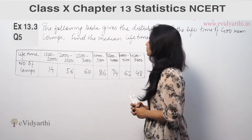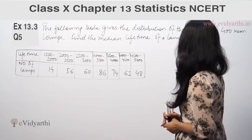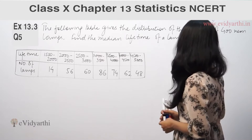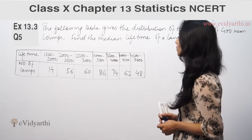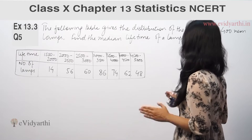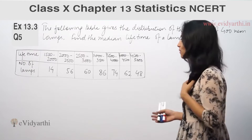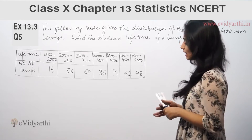The question is: the following table gives the distribution of the lifetime of 400 lamps. Find the median lifetime of a lamp.